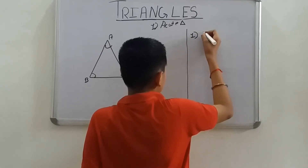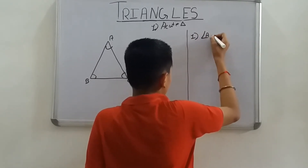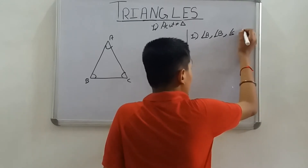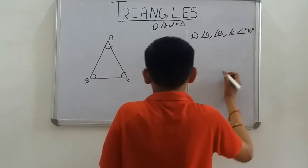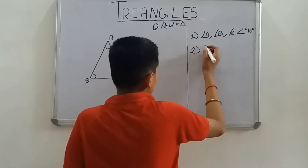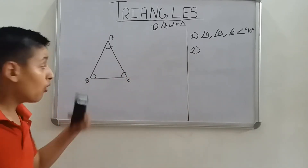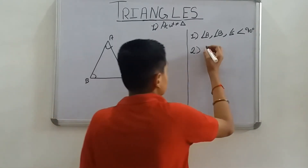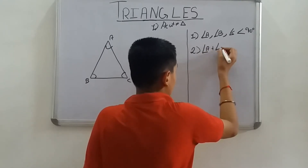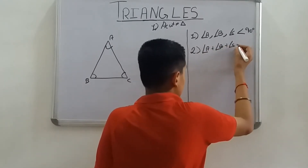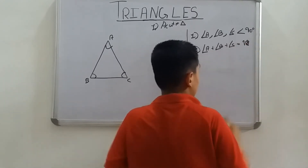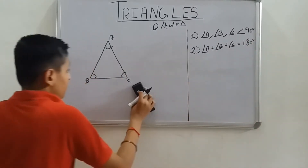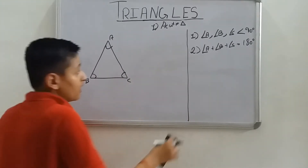First property: angle A, angle B, and angle C are all less than 90 degrees. Second property: the sum of all the angles in a triangle equals 180 degrees — angle A plus angle B plus angle C equals 180 degrees. These are the properties of the acute angle triangle.